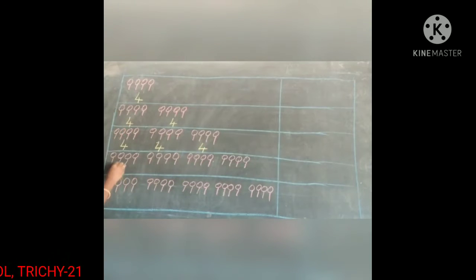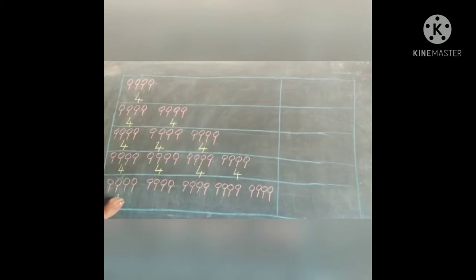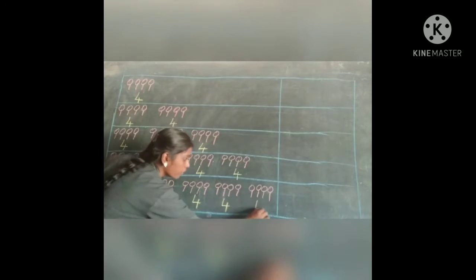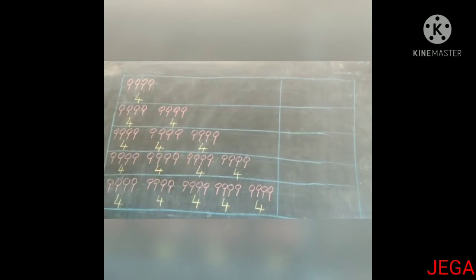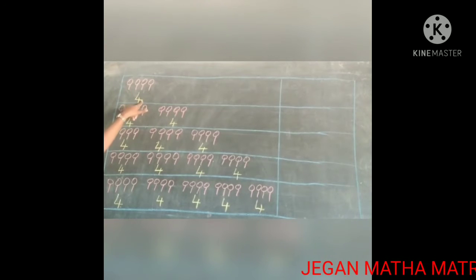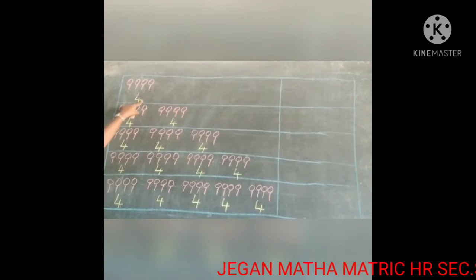So I counted here 4, here 4, here 4, and here 4 lollipops. Here 4, here 4, the next box 4, 4, 4, and 4 lollipops. Now we will count each box — how many 4's are there? Look at the first one: how many 4's are here? Only 1. So how many lollipops are there? 4 lollipops are there.